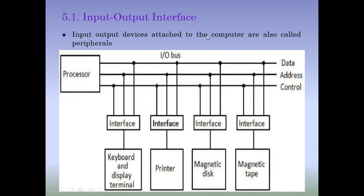Input output devices attached to the computer are also called peripherals. These peripherals communicate with the processor via three types of buses and an interface. Whichever external peripheral the microprocessor wants to communicate with, it will first enable the respective interface connected to that peripheral. For example, if the microprocessor wants to communicate with the keyboard, it will enable that interface and all other interfaces will remain in a disabled state.